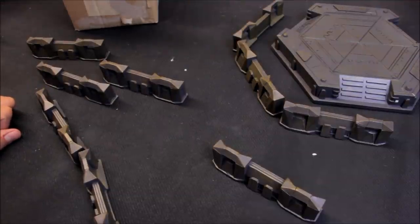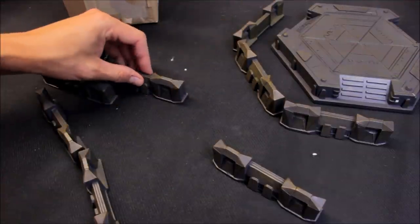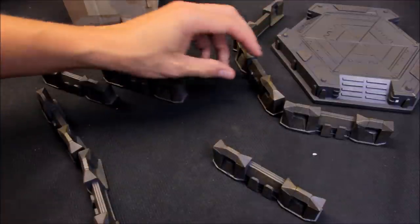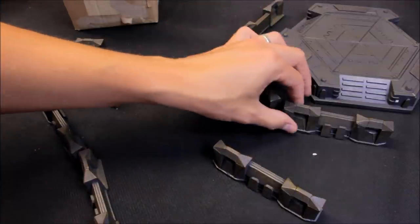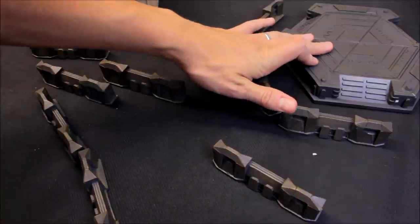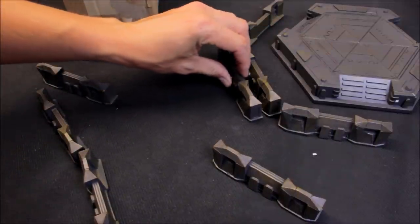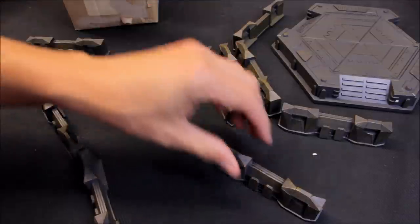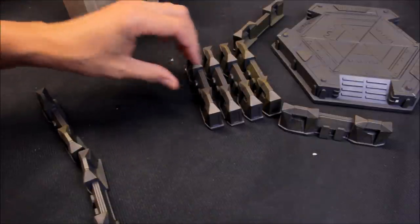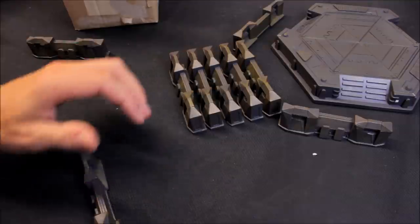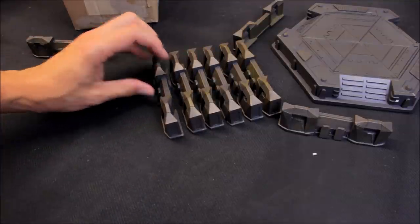So there it is. That's the two sets. They sort of go well together. GameMat.eu, they do sell them separately. But industrial walls and then the industrial landing pad just there. Check them out. It's GameMat.eu. They're the ones that produce this terrain, and then they're famous for their battle mats that they produce as well. That's the review. Thanks for watching, and tune in next time. Thank you.